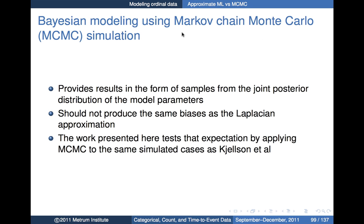If I use Markov chain Monte Carlo simulation, I'll get results in the form of samples from a joint posterior. It shouldn't produce the same kind of biases as Laplacian approximation. That seemed plausible, and the work shown here was done to essentially test that expectation.